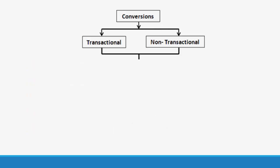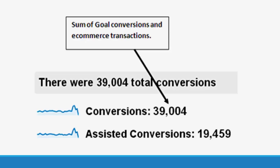When a conversion is directly tied to a transaction, it is called a transactional conversion. For example, an e-commerce transaction is a transactional conversion. When a conversion is not directly tied to a transaction, it is called a non-transactional conversion. A non-transactional conversion is referred to as a goal conversion in Google Analytics. So we have two types of conversions: transactional and non-transactional. In multi-channel funnel reports, whenever we talk about conversions, we are referring to the sum of transactional and non-transactional conversions.